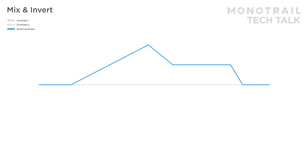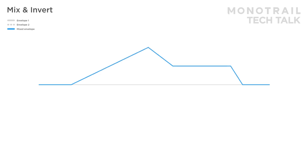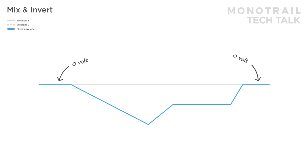Because most envelope generators only create positive voltages, inverting them is another trick that opens up possibilities. Here you see a fairly regular ADSR envelope shape — before and after the signal is generated, the output voltage is zero, and the envelope itself consists of positive voltages. If you invert this envelope, you get a signal where the output is again zero volts before and after, but the envelope now generates negative voltages. You can use this negative voltage in your patches, for example to close a filter with the envelope, or to slow down an LFO when you press a key.